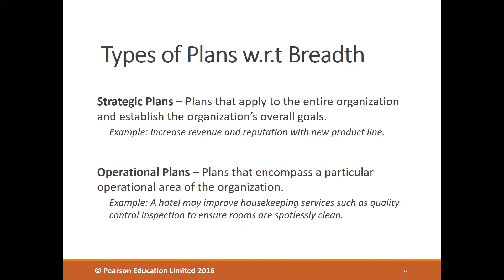Operational plans cover a particular functional area of the organization, such as the marketing, finance, human resource, supply chain, or manufacturing department. For instance, a hotel may improve housekeeping services through quality control inspections to ensure rooms are spotlessly clean — focusing on the housekeeping department as a particular operational area. But if a hotel aims to increase overall revenue or reputation in the eyes of customers, that would be a strategic plan because it covers the entire organization.